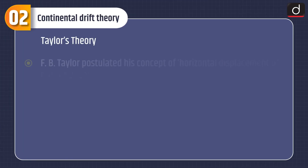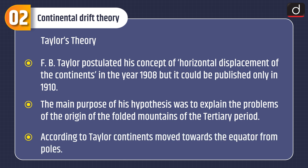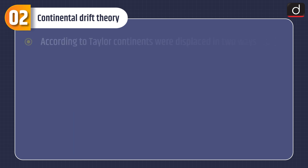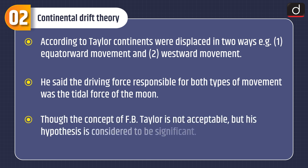Taylor's Theory: F.B. Taylor postulated his concept of horizontal displacement of the continents in the year 1908, but it was published only in 1910. The main purpose of his hypothesis was to explain the problems of the origin of the folded mountains of the Tertiary period. According to Taylor, continents moved towards the equator from the poles, and were displaced in two ways: equatorward movement and westward movement. He said the driving force responsible for both types of movement was the tidal force of the moon. Though the concept of F.B. Taylor is not fully acceptable, his hypothesis is considered to be significant.